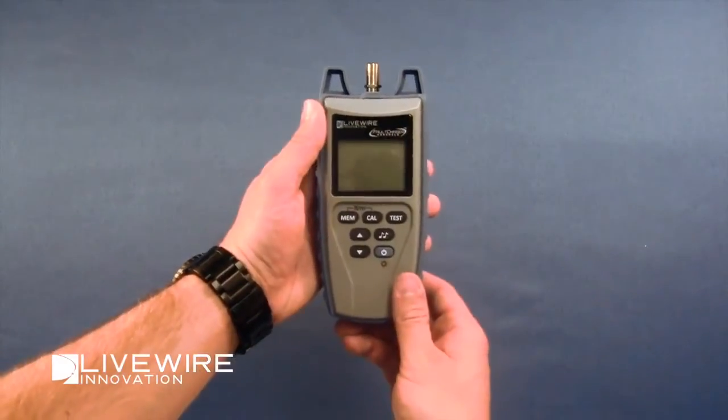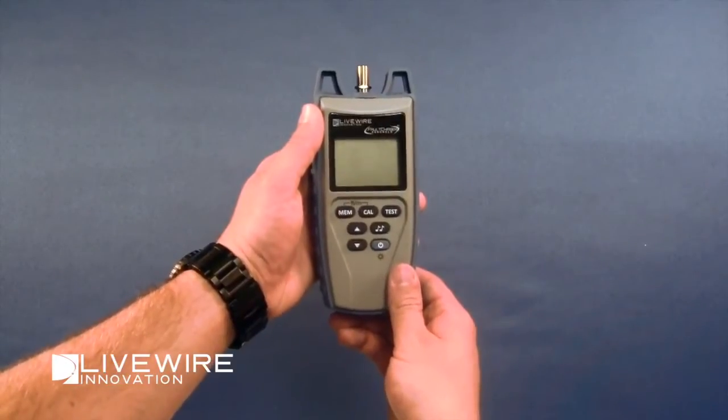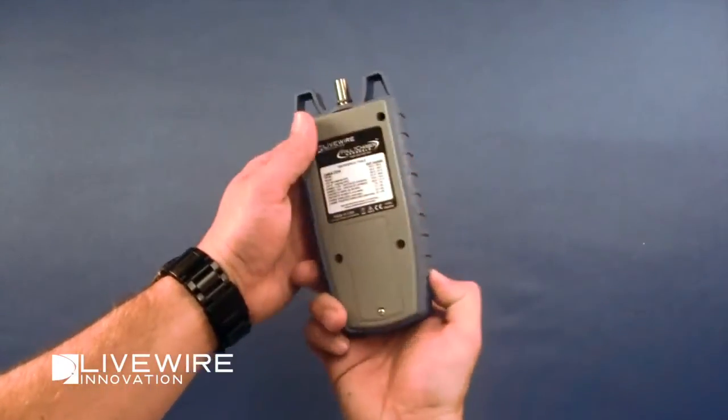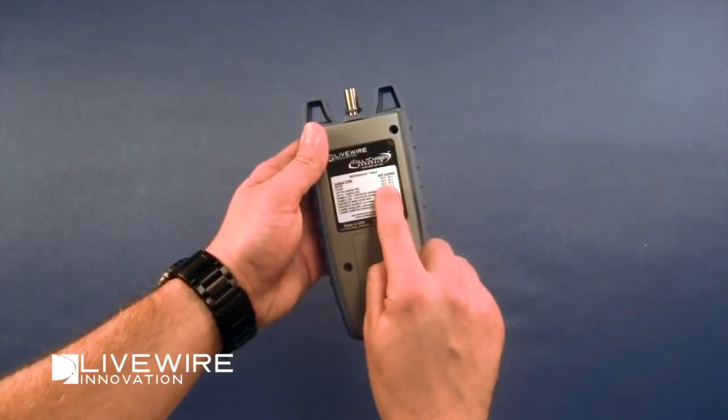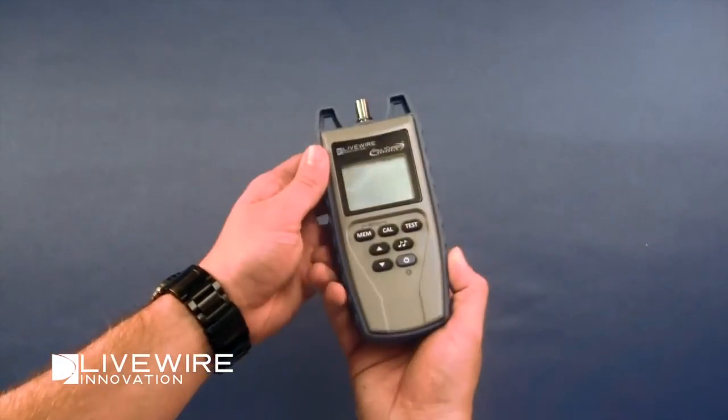To get started, we need to set the NVP value, also known as the VOP value of the cable we would like to test. Common cable NVP values can be found in a list on the back of the Fault Chaser. If the cable is not listed, we can use the calibration function which I'll tell you about a bit later.